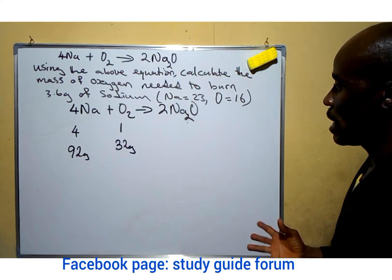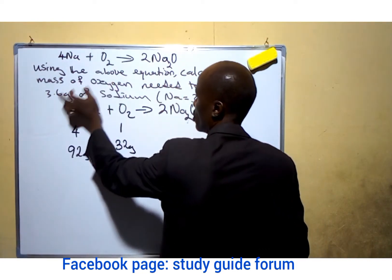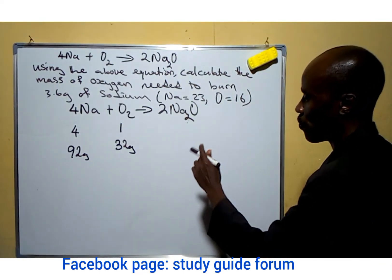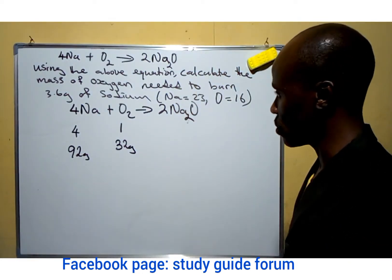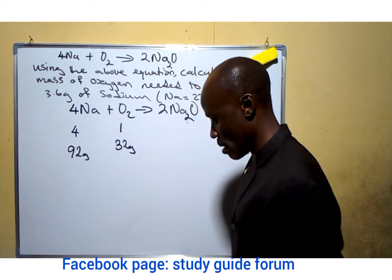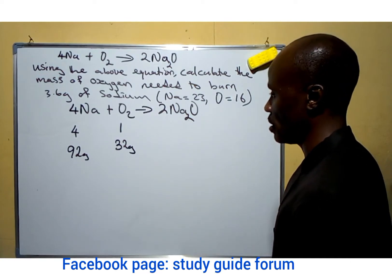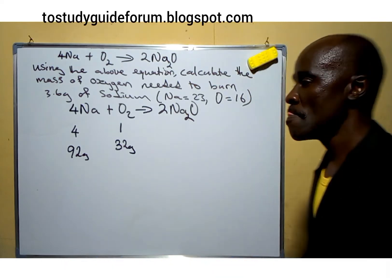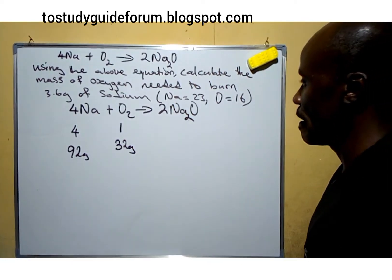Looking at this, the equation says we should find the mass of oxygen required to burn completely 3.6 grams of sodium. From what we have here, it's obvious that we can solve this problem using two methods: we can either work with moles or work directly with the mass. In our mass-volume relationship topic we can get more detailed information regarding this. So the first thing we are going to do is solve based on the moles.